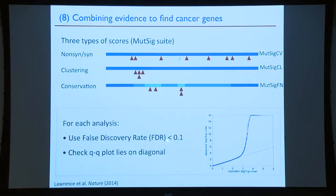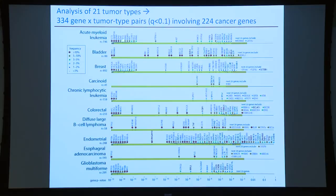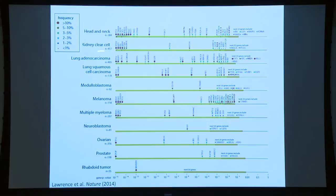We ran this analysis on 21 tumor types and found significant cancer genes for each. The bubble size and color represent mutation frequency. For bladder cancer, most genes are mutated in more than 10% of patients, and with only 100 samples analyzed, we lack power to find less frequent ones. In breast cancer, with nearly 1,000 cases studied, we see many significant genes at roughly 1-2% frequency, many of them known cancer genes.